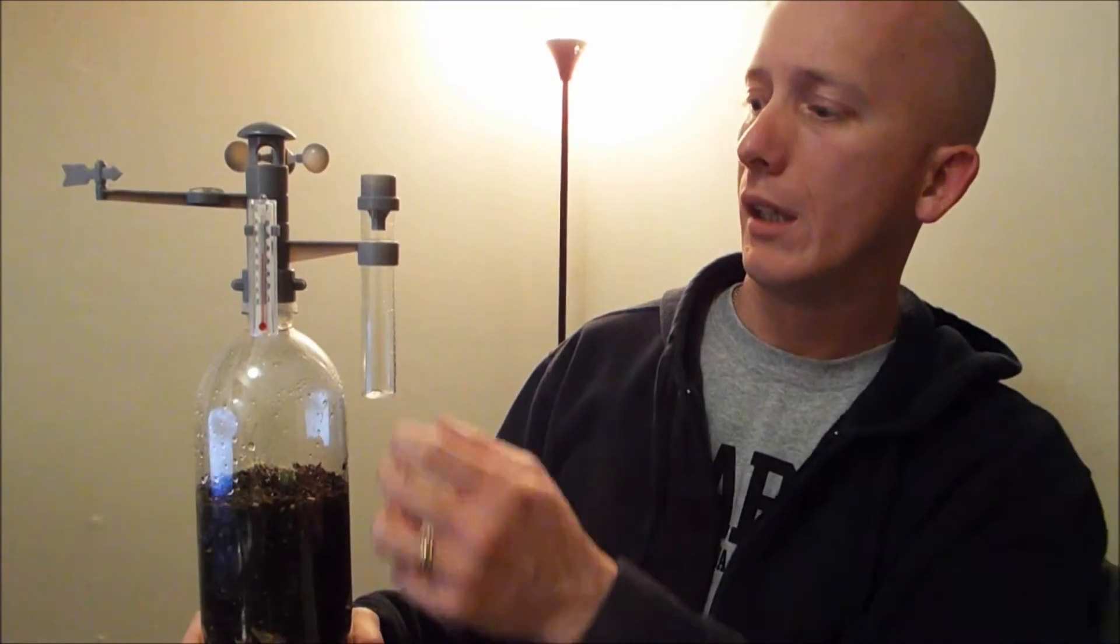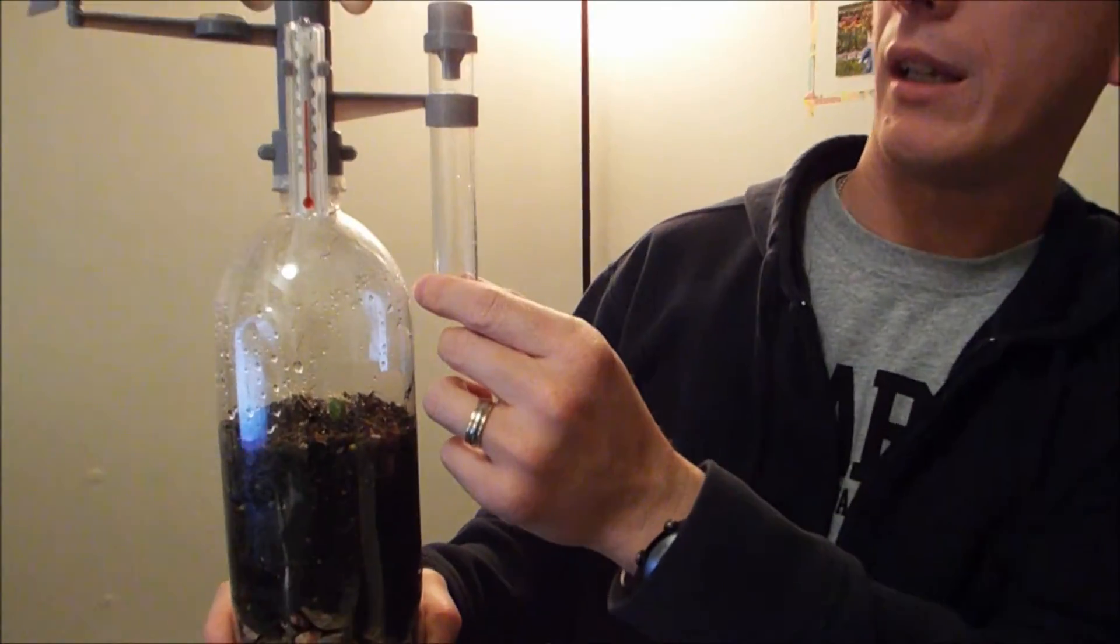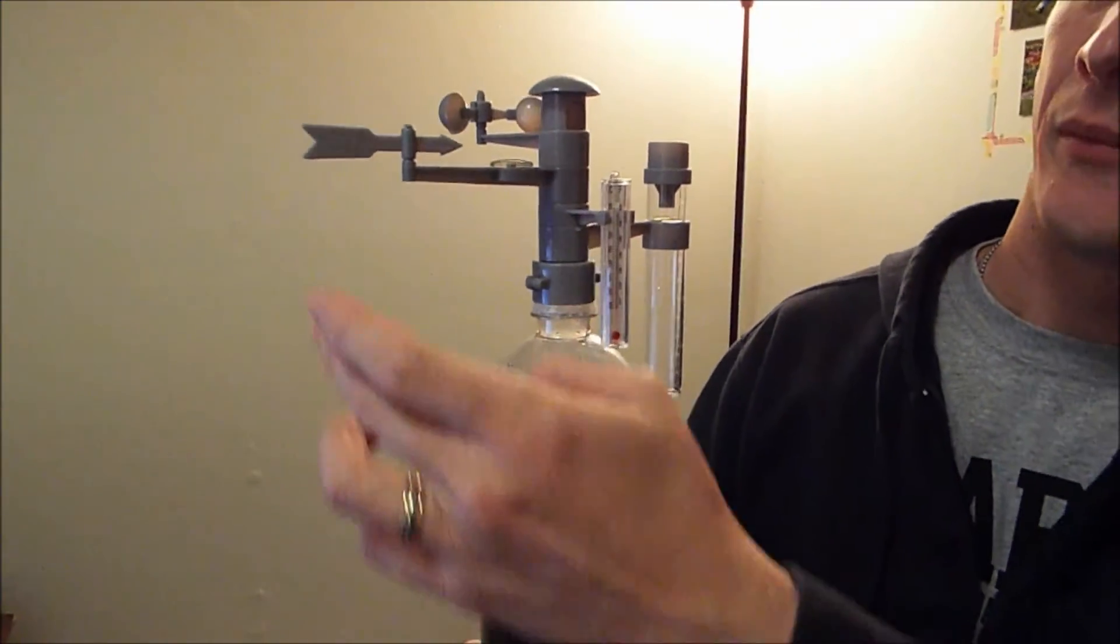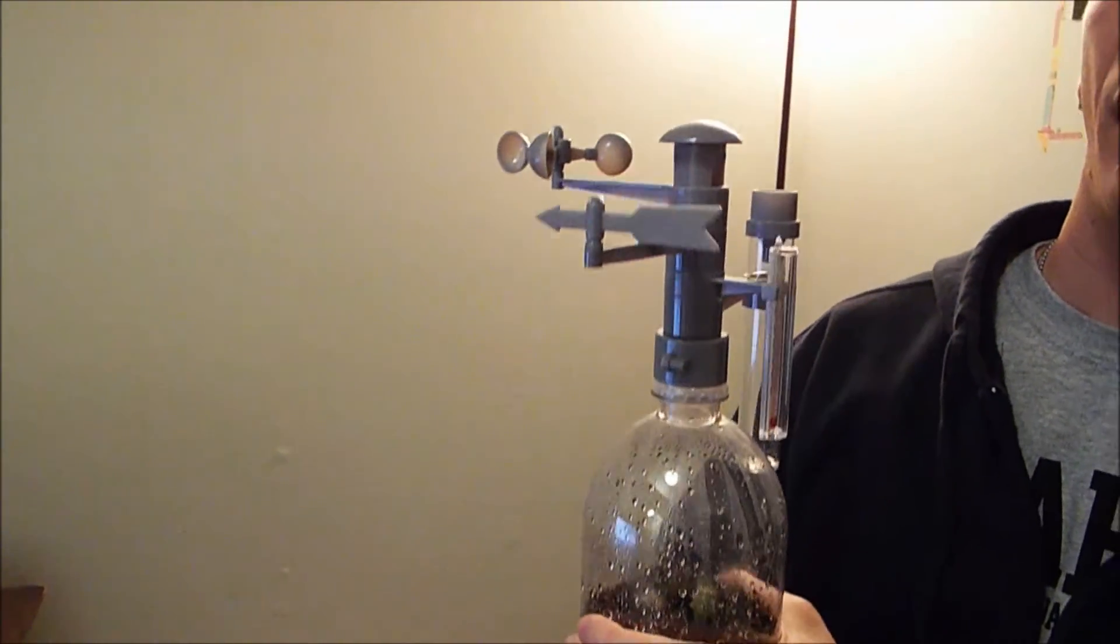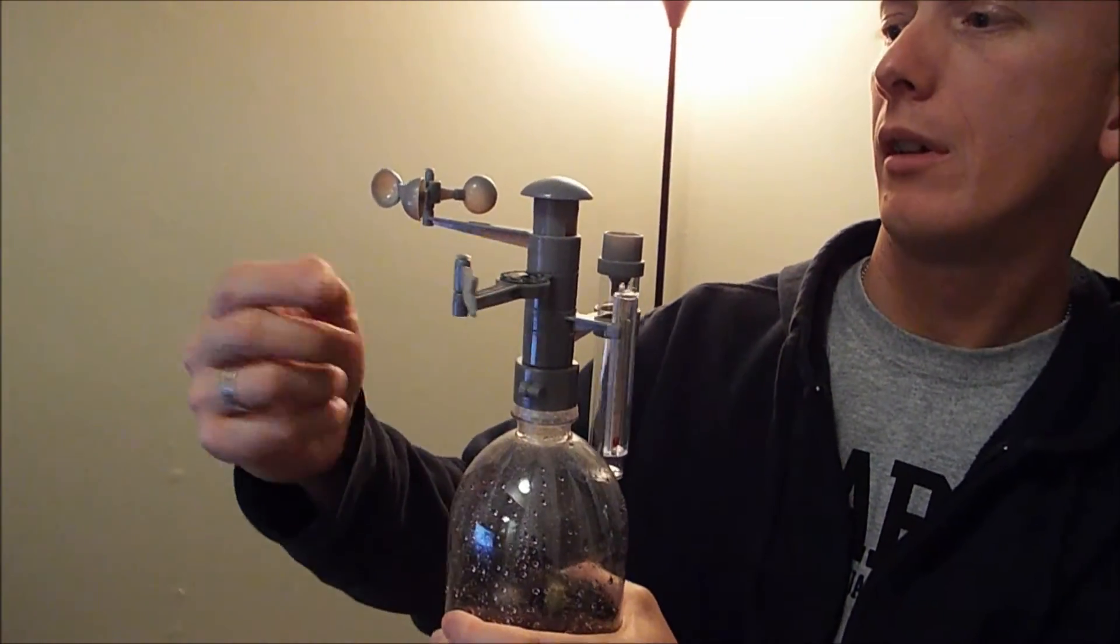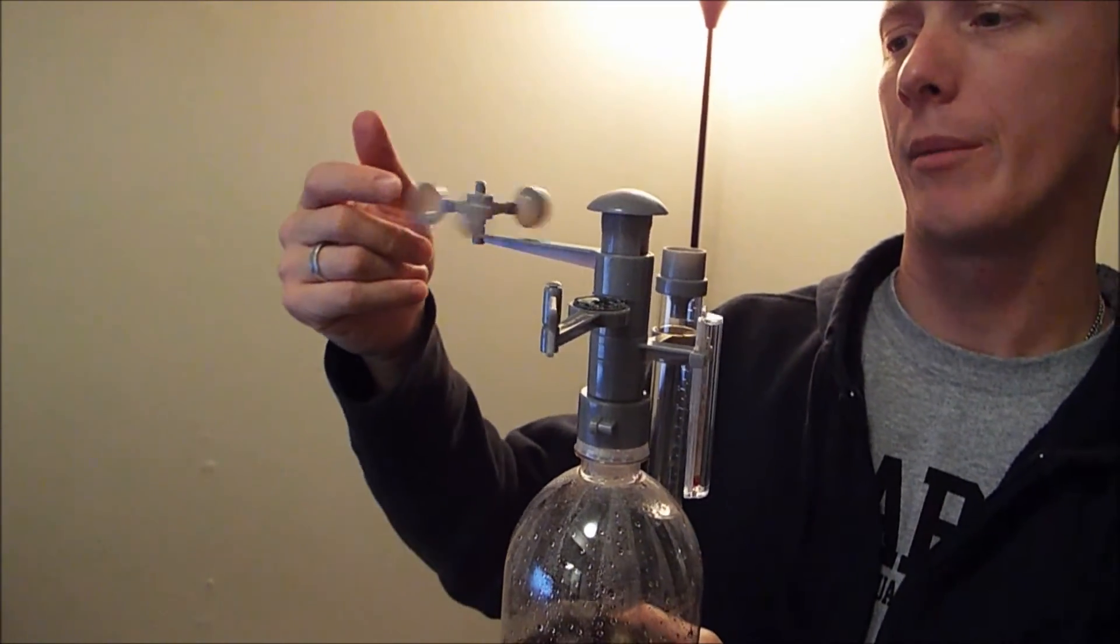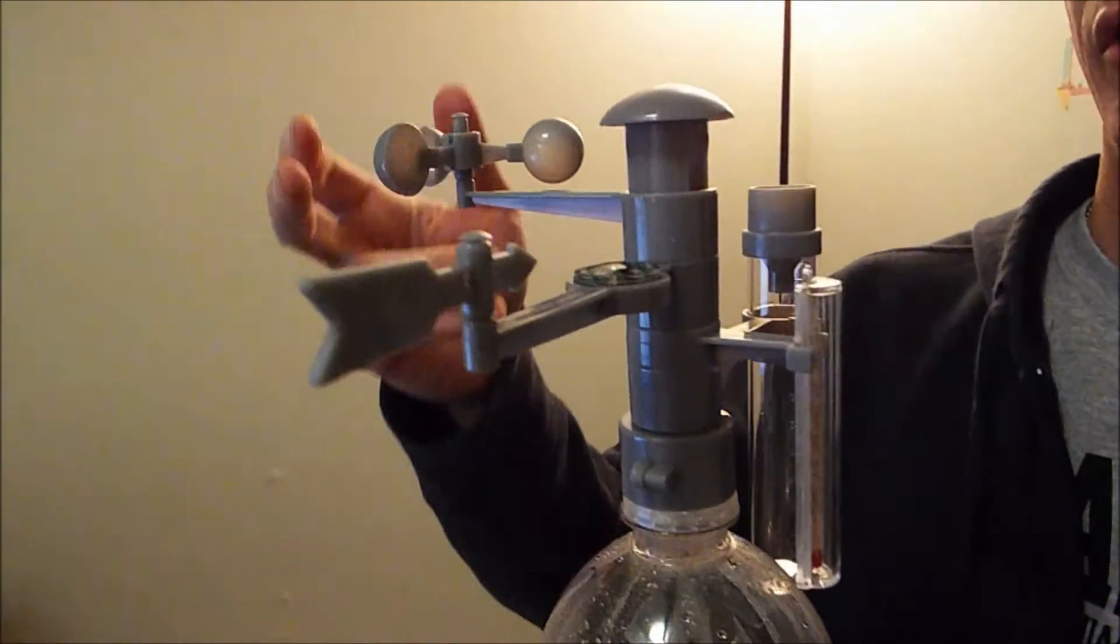So here again, just to recap on some of the cool things about it, it's got a little rain gauge, which in Arizona is almost pointless. It's got the little thermometer here, the weather vane, compass on the top, and then the anemometer for the wind speed.